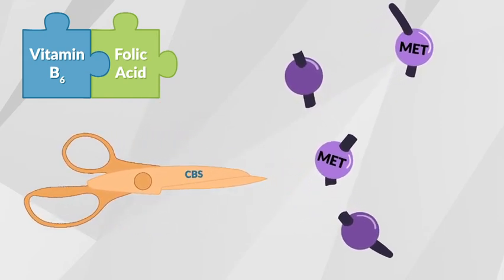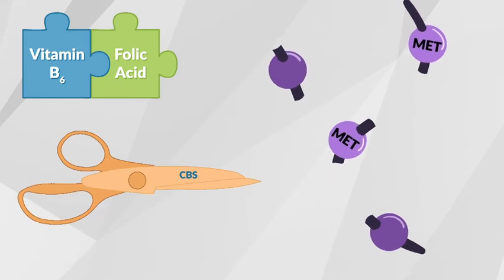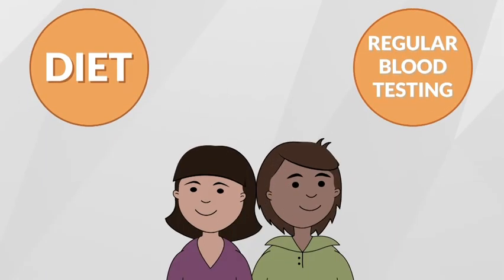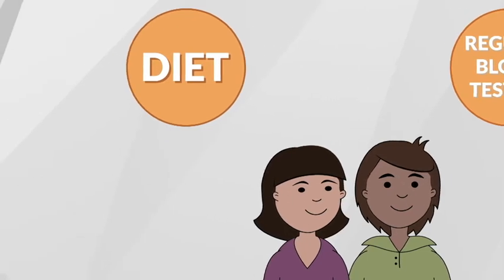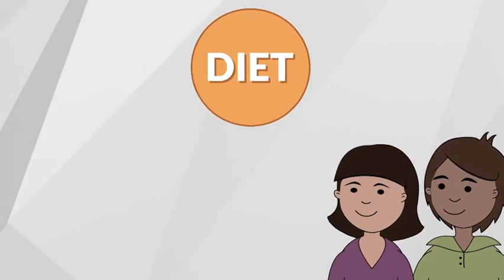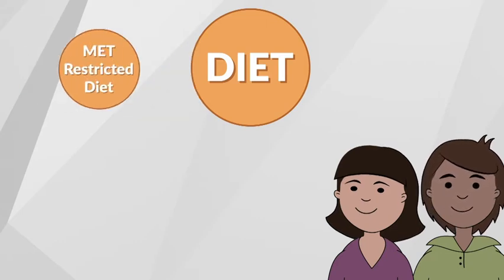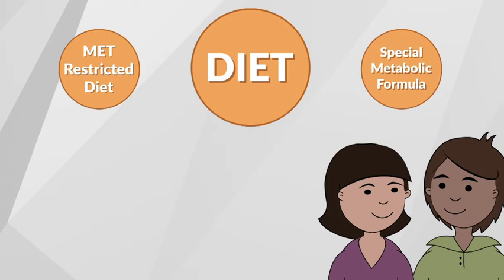If the vitamin B6 does not help or only partially helps, HCU is managed through your baby's diet and regular blood testing. There are two main components to managing HCU through diet: a methionine-restricted diet and a special metabolic formula. Individuals with HCU may also be prescribed betaine, a drug designed to help lower blood levels of homocysteine.